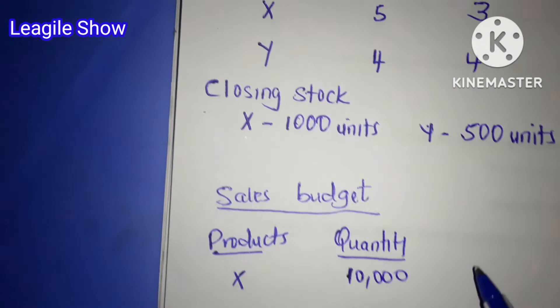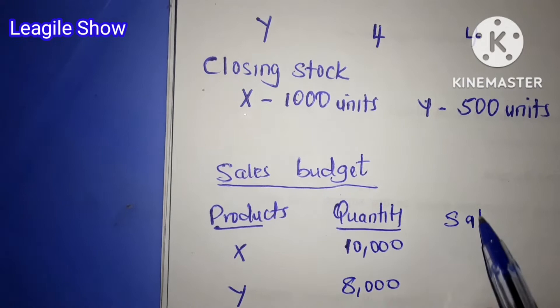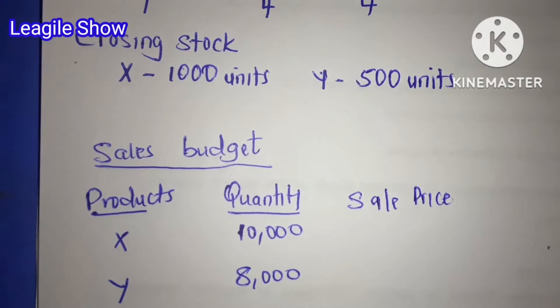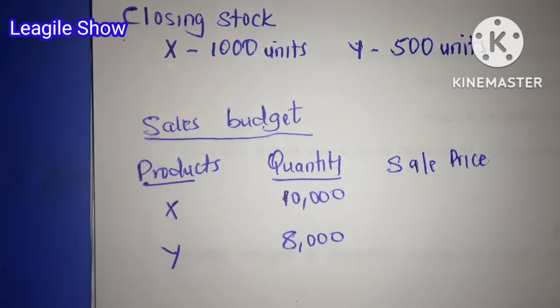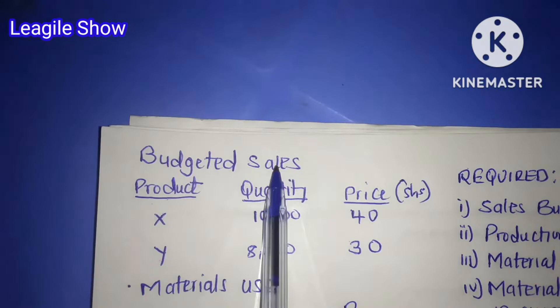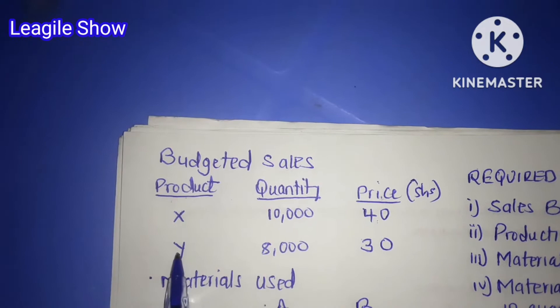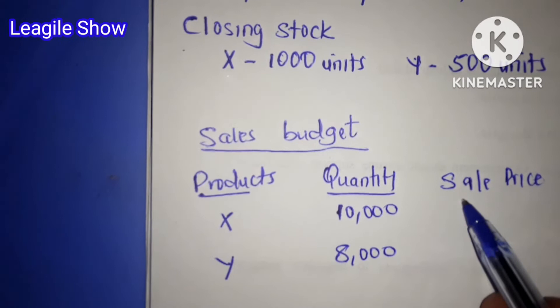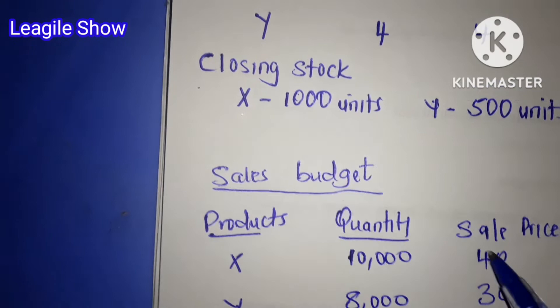Then from there, we are going to have the sale price. What are we having as the sale price for each product? We go back to our question under the budgeted sale. The price for X has been given as 40 and that of Y is 30. So we indicate them here — X is 40 and Y is 30.